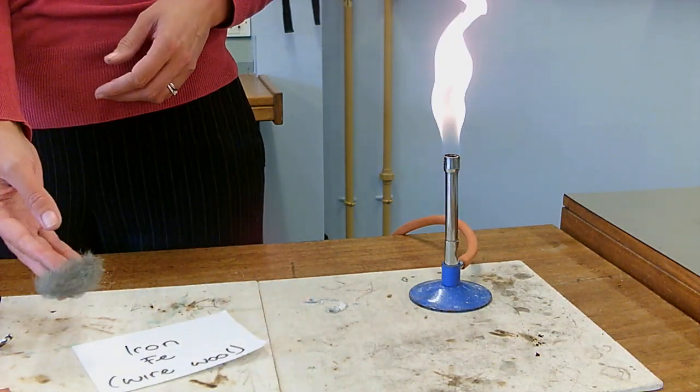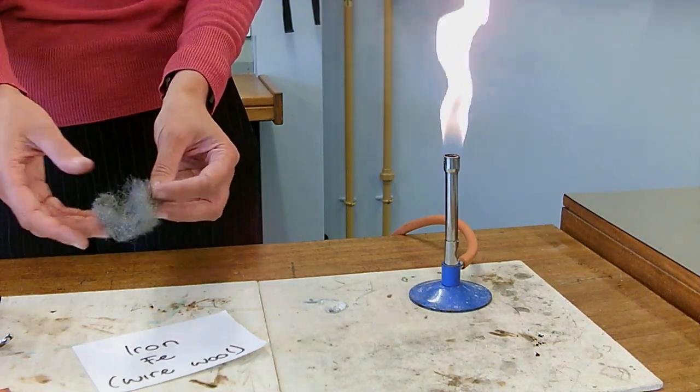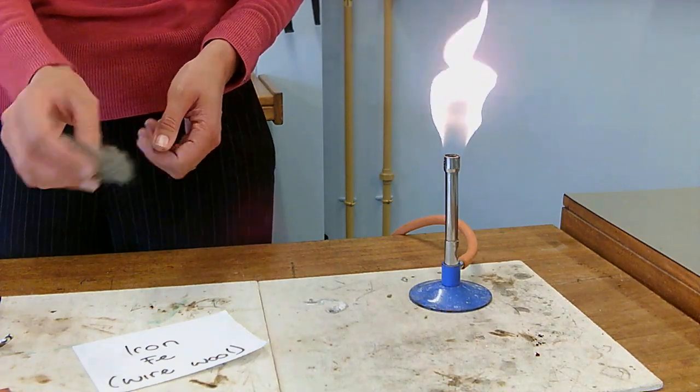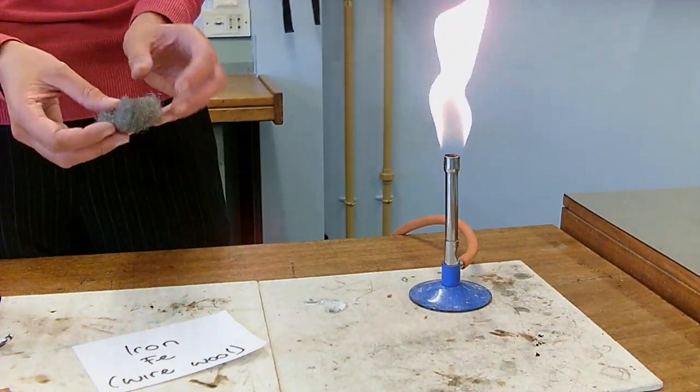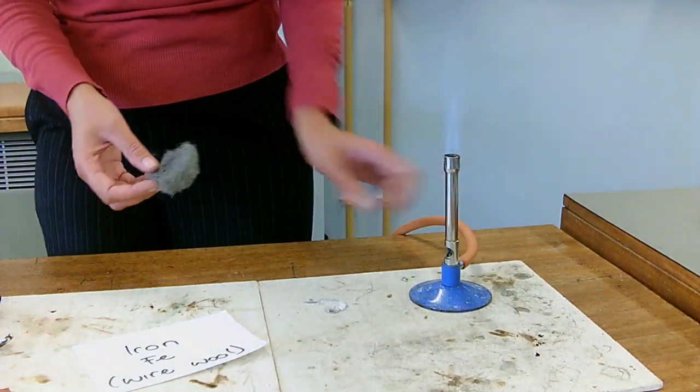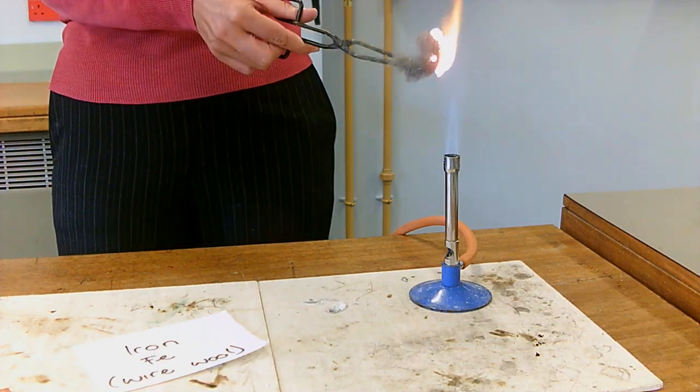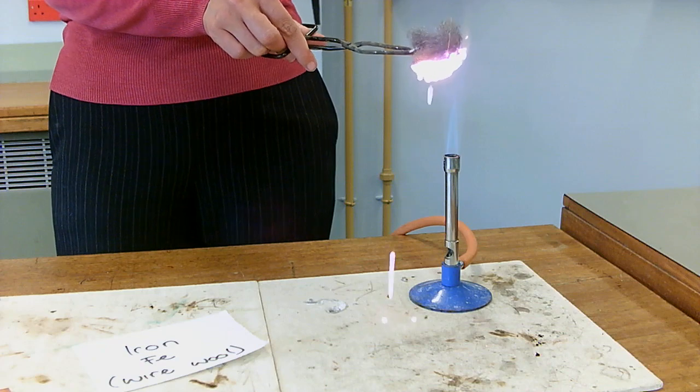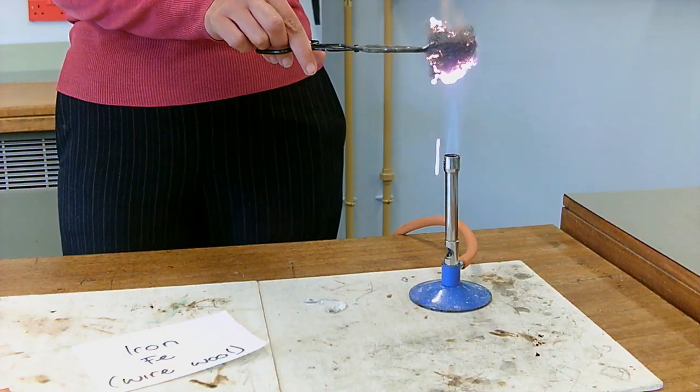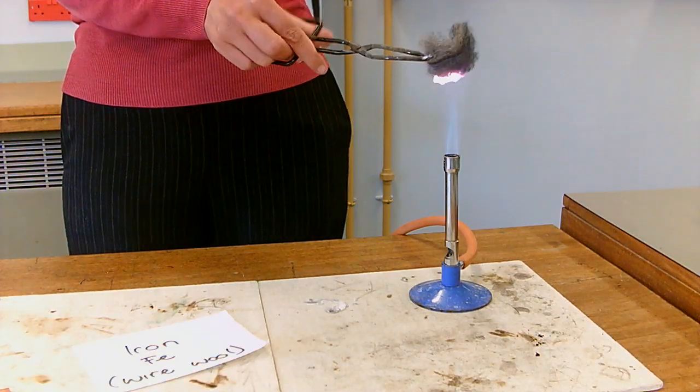Next thing we're going to look at is iron. I've got this wire wool here and that is just made of iron atoms drawn out into threads. Your mum and dad might have used it to scrape old paint off. I'm going to put that in and see what happens. It's a roaring flame, nice and hot. See that's reacting much faster than the copper. Tiny little bits falling off it.